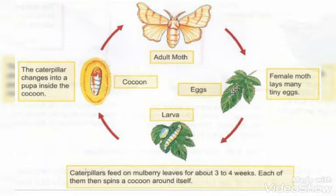You can see the life cycle of the silkworm in the diagram. Adult moth — then it will lay eggs — from eggs, larva — from larva, cocoon — and this cycle will go on and on.